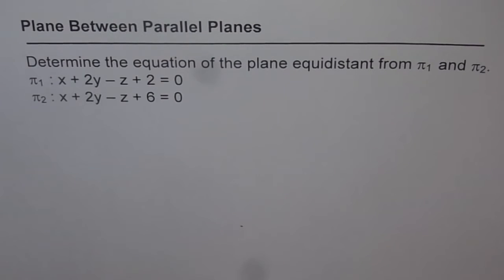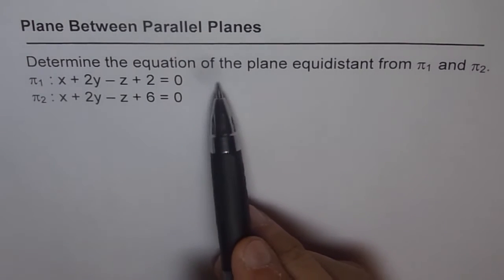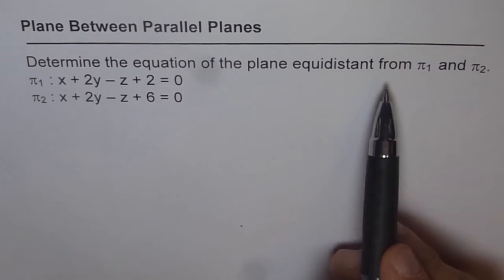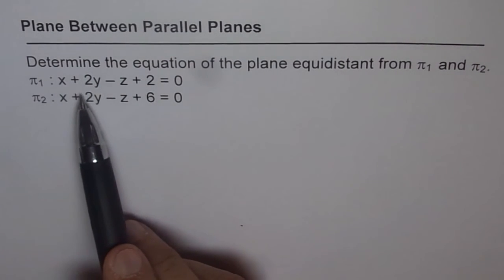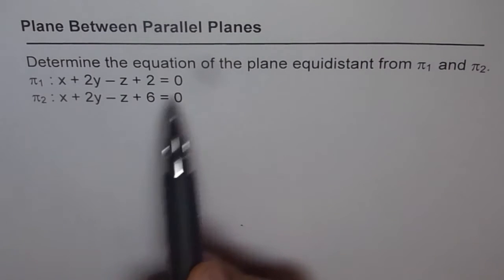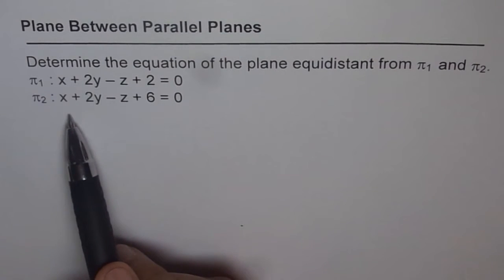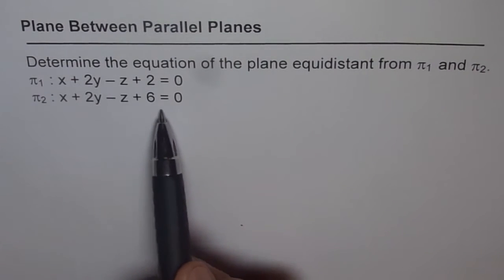Let's now find the equation of a plane between two parallel planes. Here is a question which says determine the equation of the plane equidistant from π1 and π2. π1 is given to us as x + 2y - z + 2 = 0 and π2 is x + 2y - z + 6 = 0.